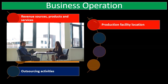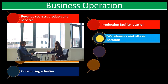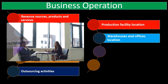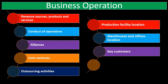Then we have the product facility locations — where are they located, how many facilities do they have, where do they produce these products? Warehouse and office locations — we also want to understand where the offices are, where the inventory is stored, where the admin and business is done.